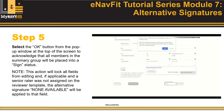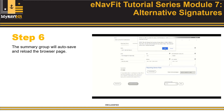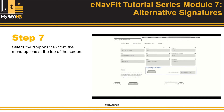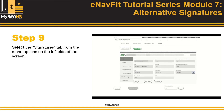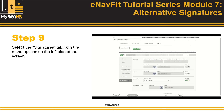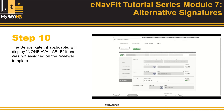Note that this action will lock the summary group for editing, and if applicable and a senior rater was not selected on the reviewer template, the alternative signature 'None Available' will be entered into that field. Step 6: The summary group will auto-save and reload the page. Step 7: Select the Report tab from the menu options at the top of the screen. Step 8: Select the Show-Hide toggle if the member information is not expanded. Step 9: Select the Signatures tab from the menu options on the left side of the screen. Step 10: The Senior Rater, if applicable, will display 'None Available' if one was not selected on the reviewer template.